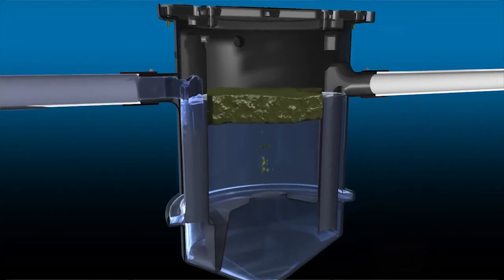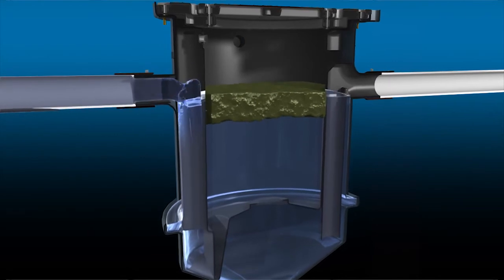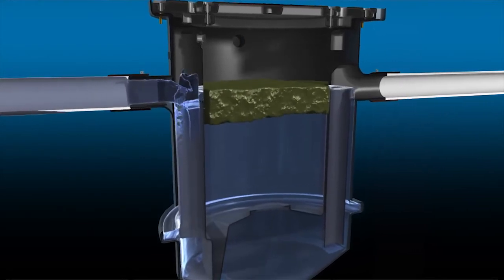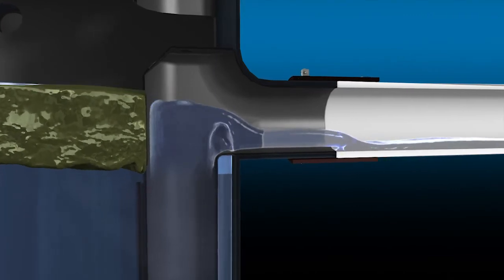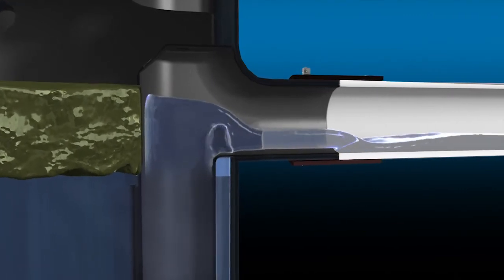As water and grease flow into the interceptor, the liquid level in the main tank rises. Once the liquid level rises sufficiently, clean water from the bottom of the tank exits the interceptor through the outlet pipe.